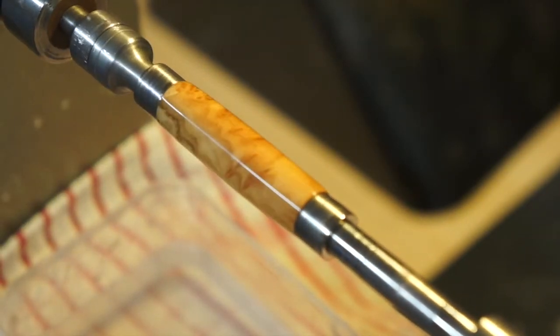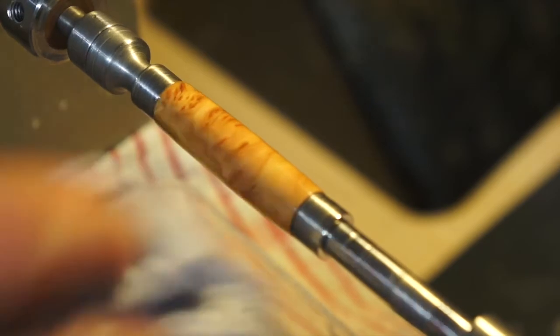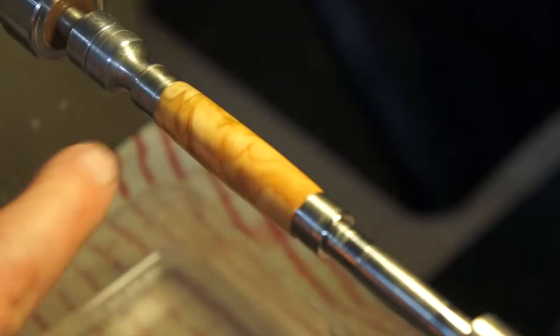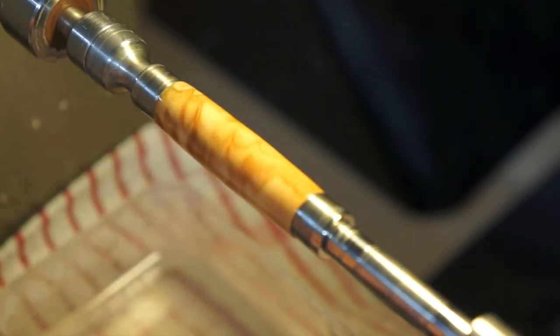So there we have the yellow boxwood, beautiful pattern here with the spikes.